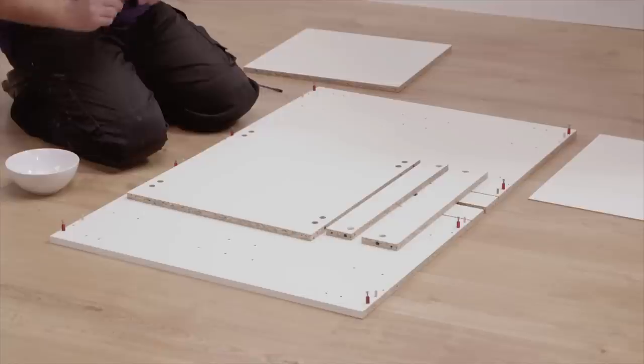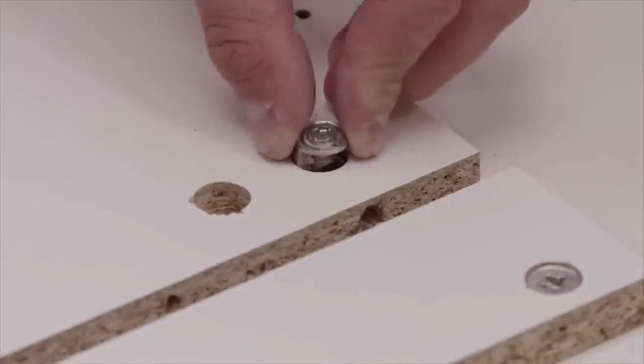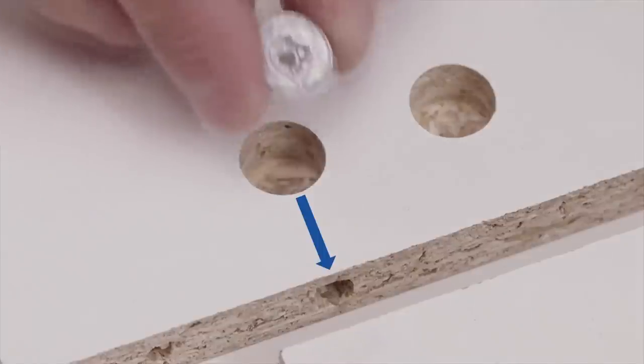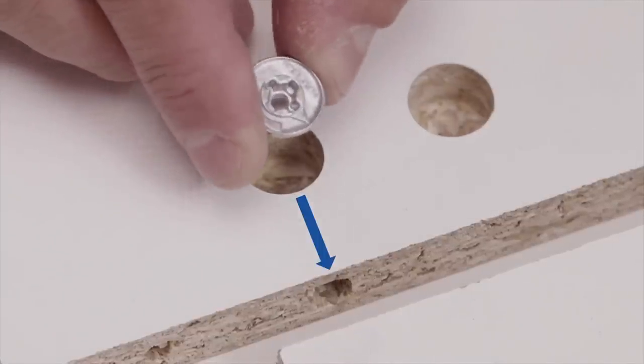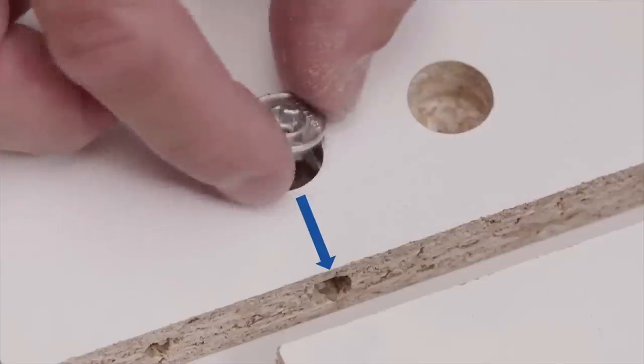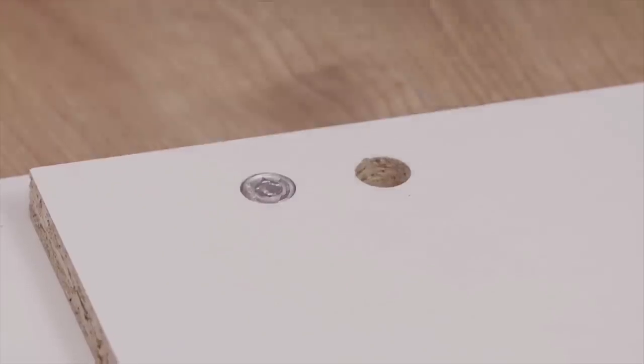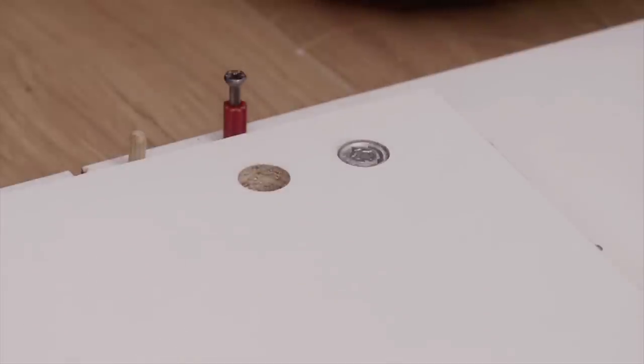Similarly, place locking cams into the holes in the bottom panel as directed by the instructions. Make sure the arrows on the locking cams point towards the end of the panel. This means they are unlocked and can receive the cam studs.